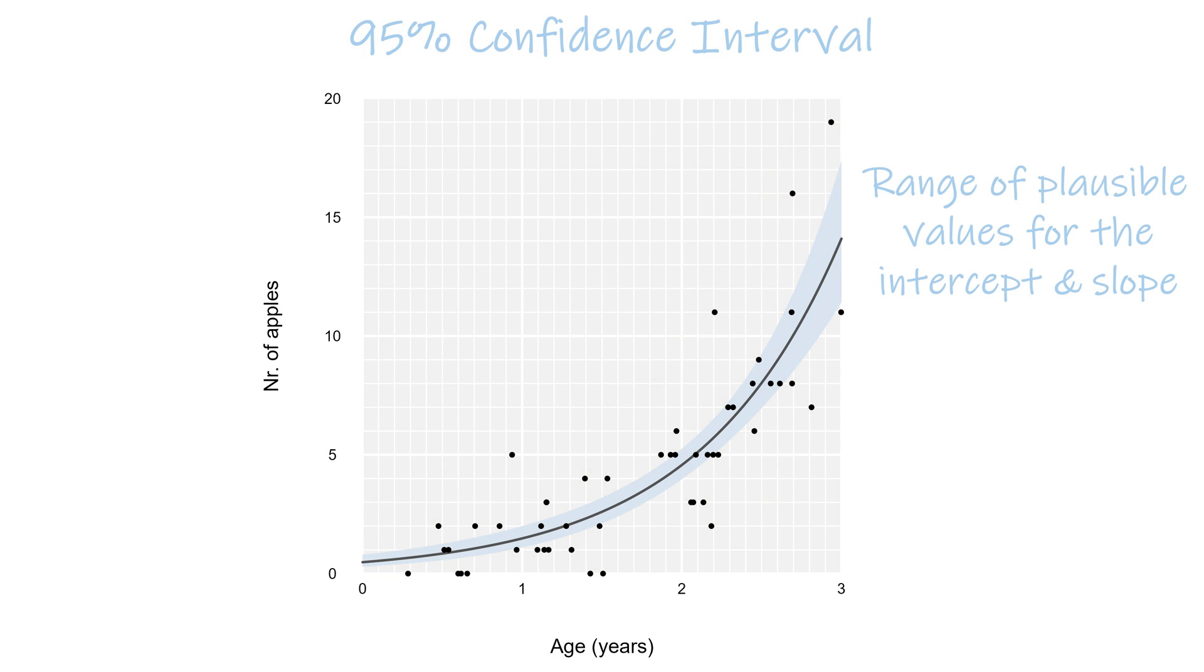For the confidence band, this doesn't apply, because it's not about raw counts, but about the average rate at which we count, lambda. Since the rate lambda can take on any non-negative number, we also end up with a nice smooth confidence band.